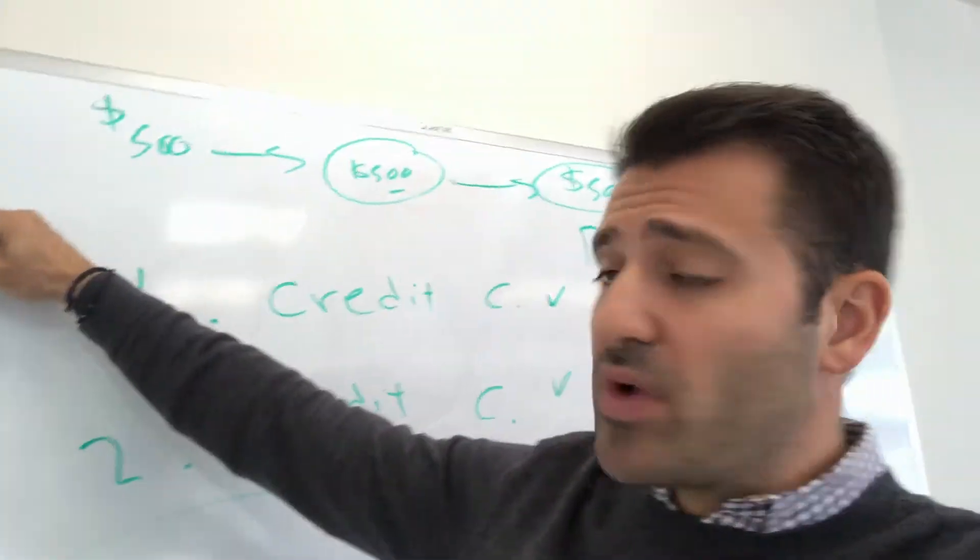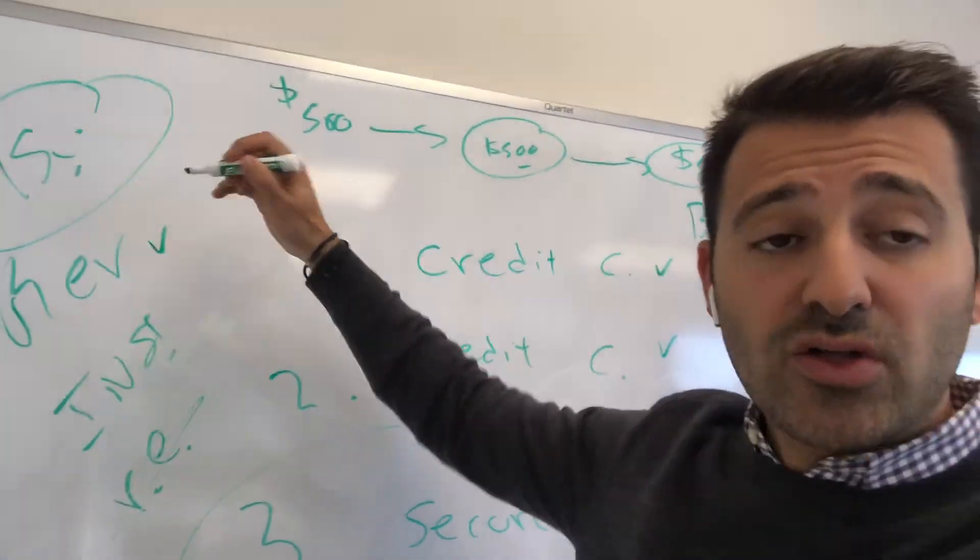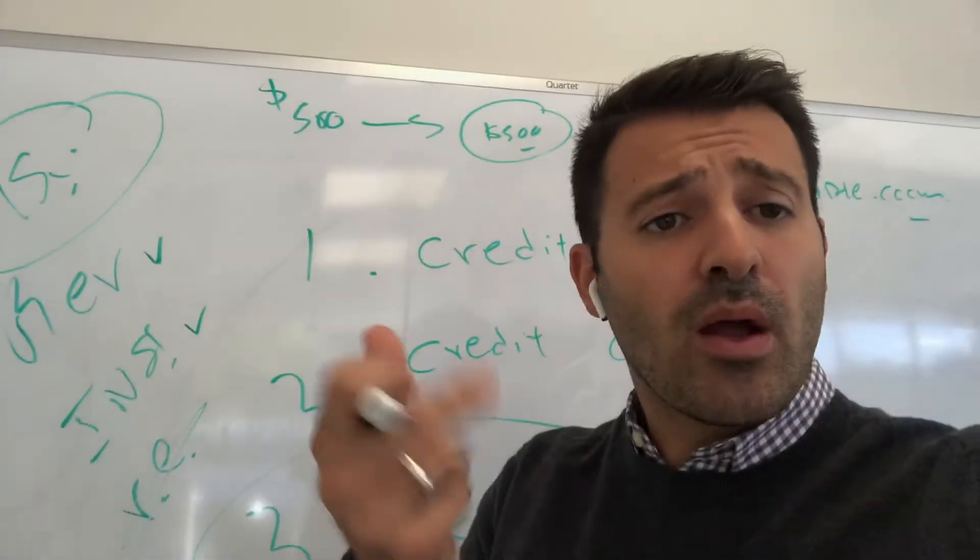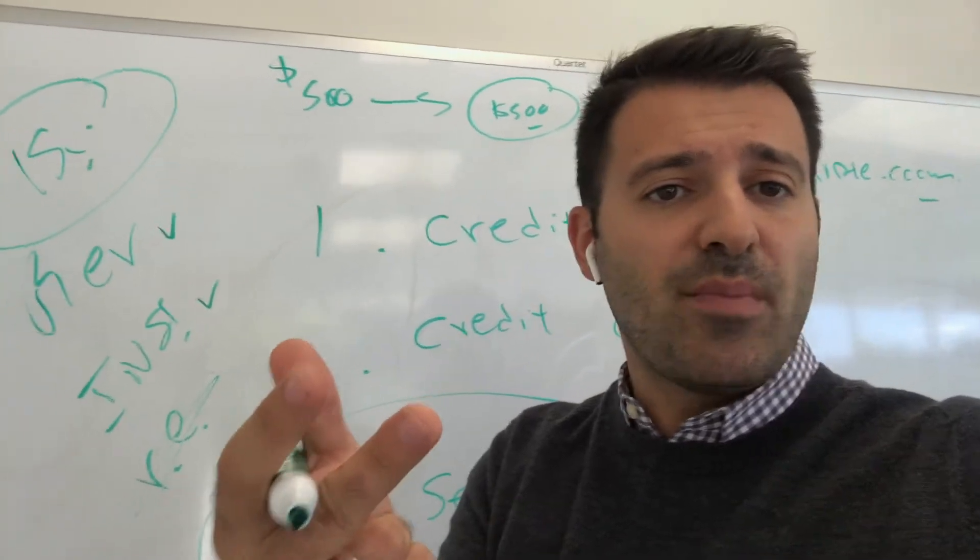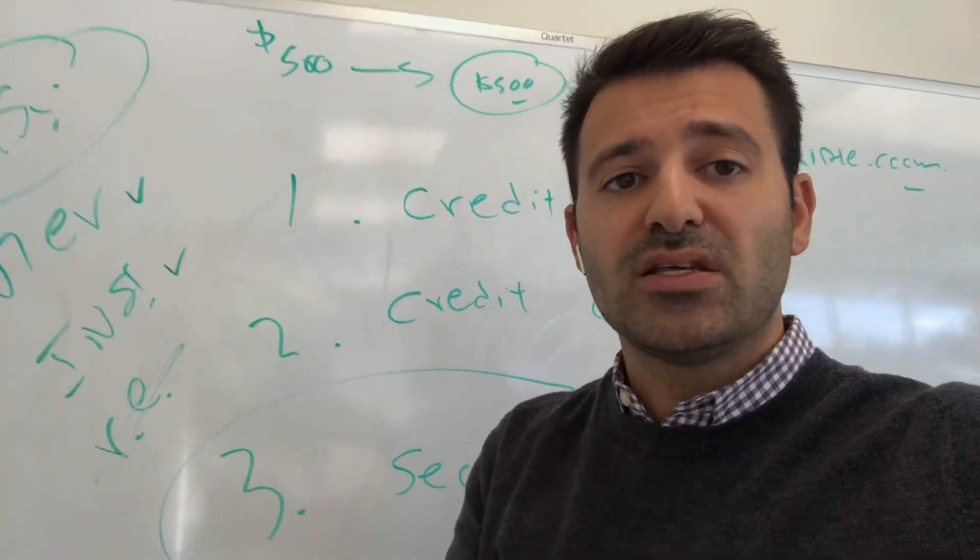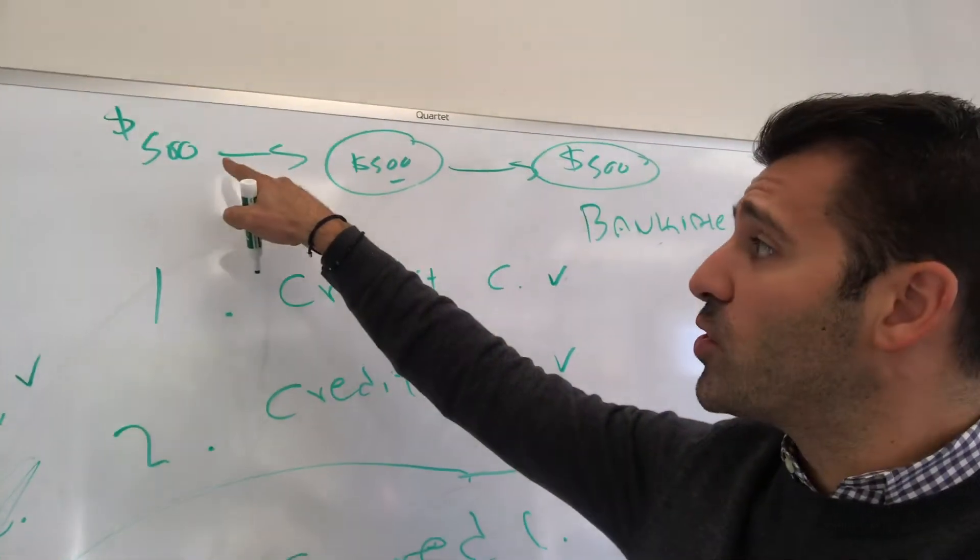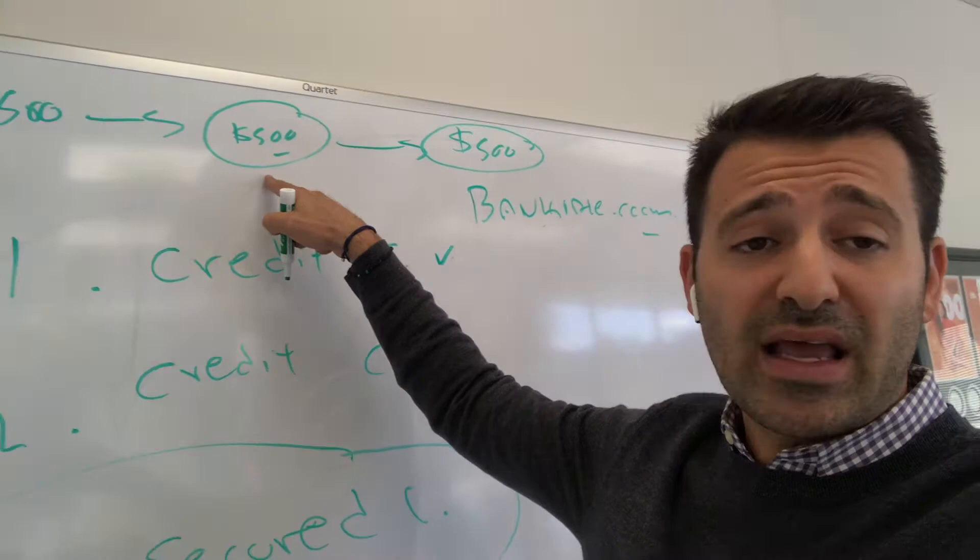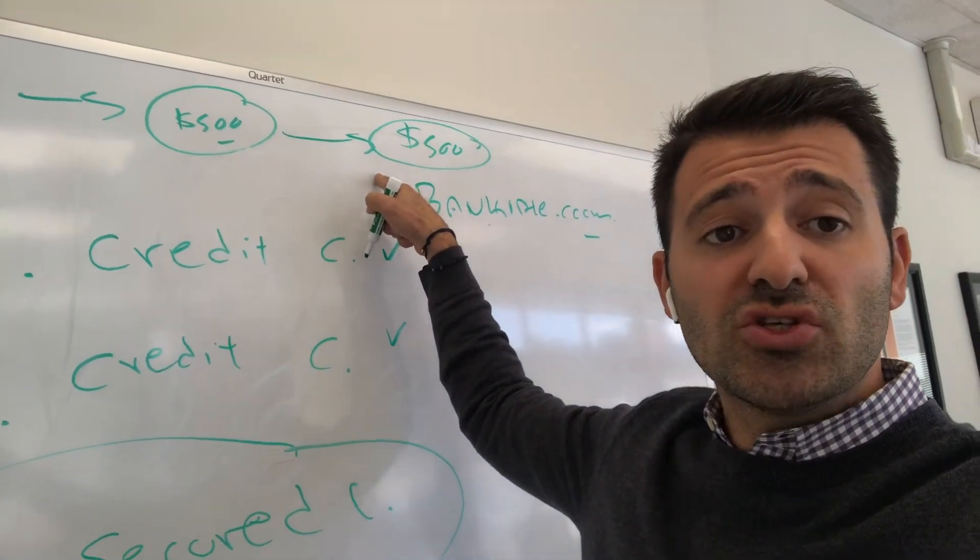And then we want to get a secured loan. So, remember, we want a good, healthy mix of active accounts. We have revolving accounts, which are credit cards. We have installment accounts, which are personal loans, student loans, or car loans. But again, the dilemma is we don't have credit. How are we going to get these things? Well, this same concept here with a secured credit card where you put $500 into, or you give it to the bank as collateral and they give you a credit line for $500, you can actually do that with an installment loan.